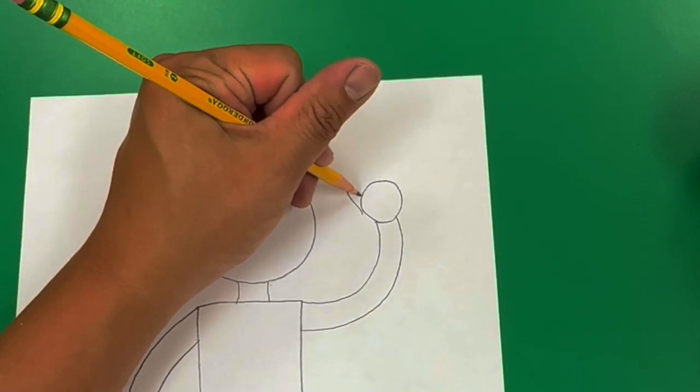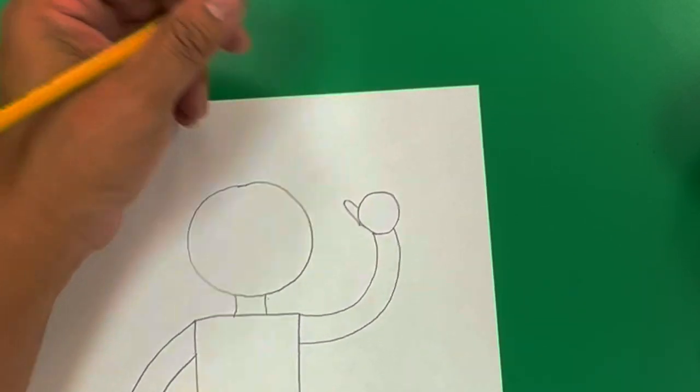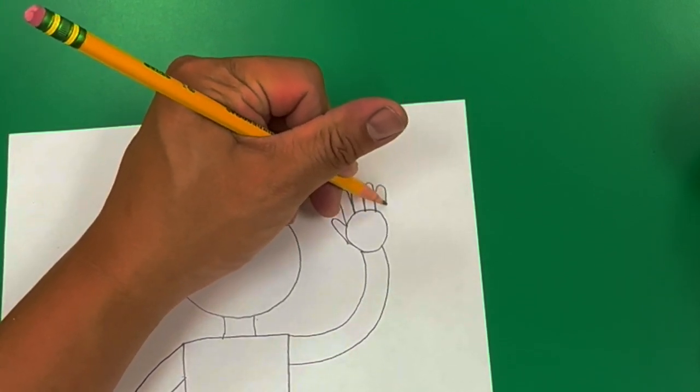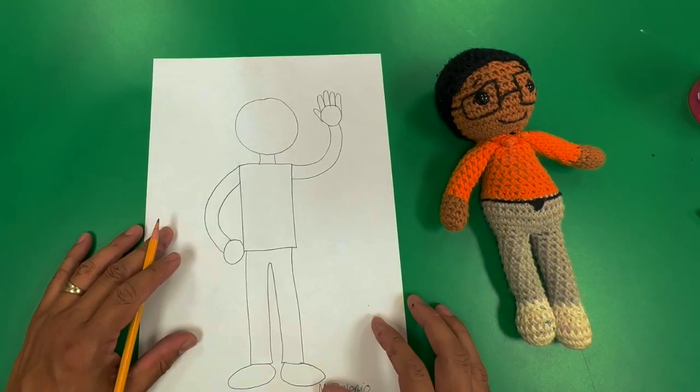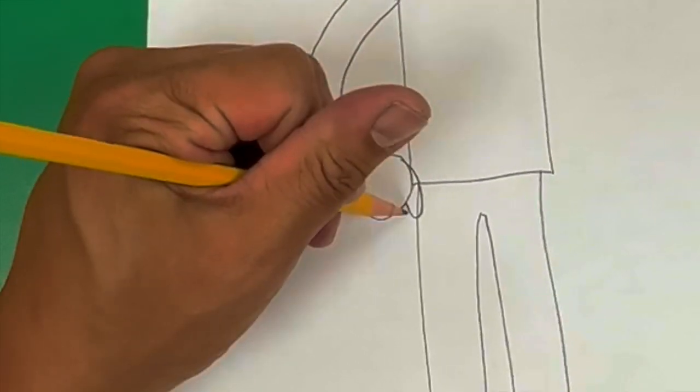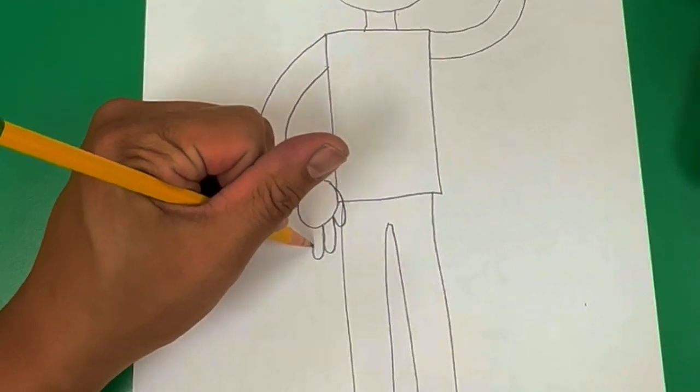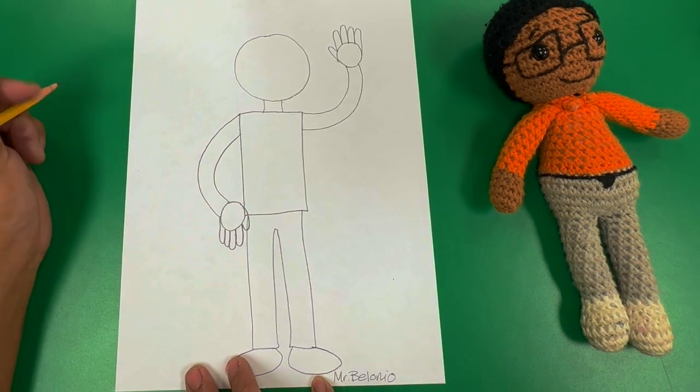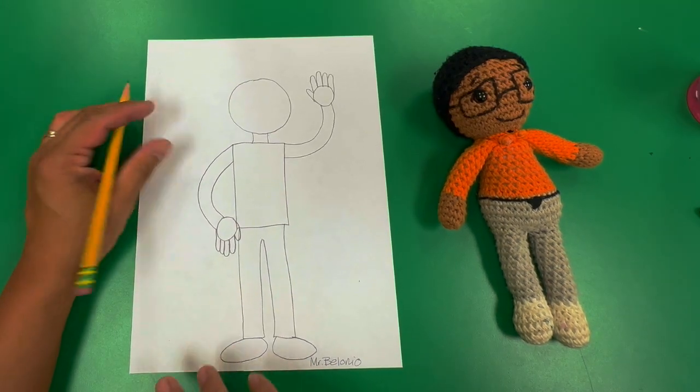Now I'm all set to draw the fingers. Don't just draw straight lines for the fingers like a scarecrow. They kind of look like hot dogs. One, two, three, four, five hot dogs. We all know they're not hot dogs, they're fingers. But you get the idea.